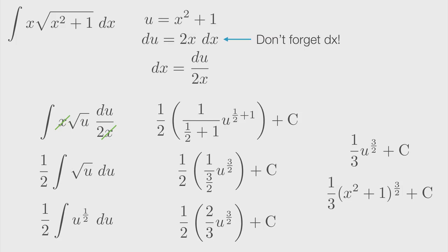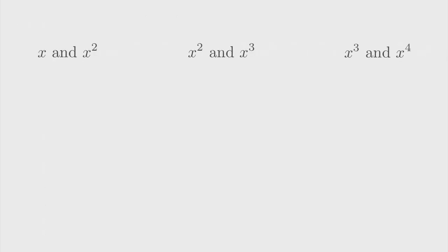You know that you've got a great candidate for a u-substitution problem if you can see two terms that are off by one degree. For example, you've got x and x squared, x squared and x cubed, x cubed and x to the fourth, etc. Even natural log of x and x.